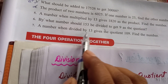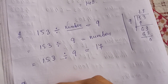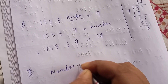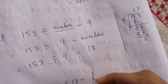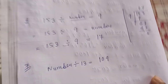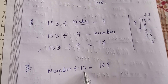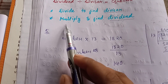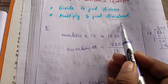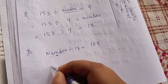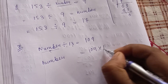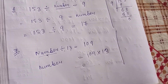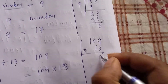Question 7: A number when divided by 13 gives 109. Here 109 is the quotient, and we need to find the dividend. To find the dividend we have to multiply. So the number equals 109 times 13.